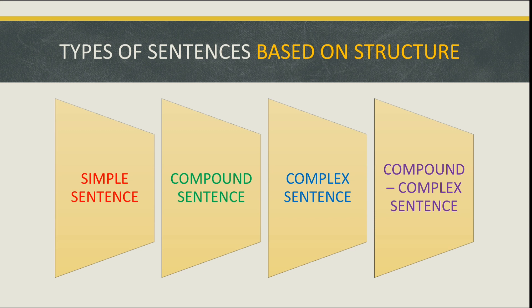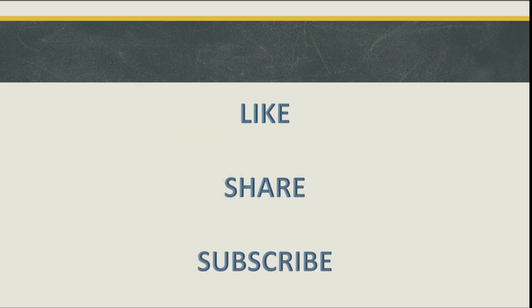In a compound-complex sentence there are a minimum of three clauses — two independent clauses and one dependent clause. So this is an overview of phrase, clause, and sentence. Hope you all liked this video — if you did, please like, share, and subscribe. Thank you!